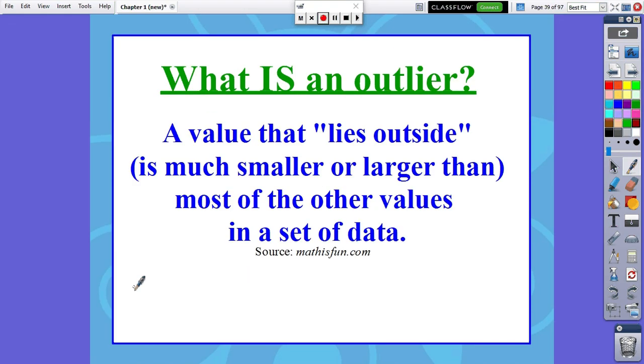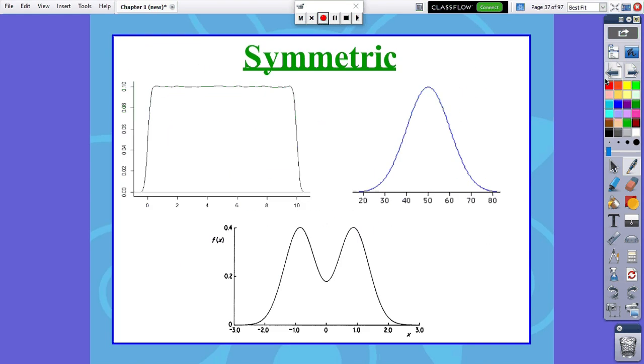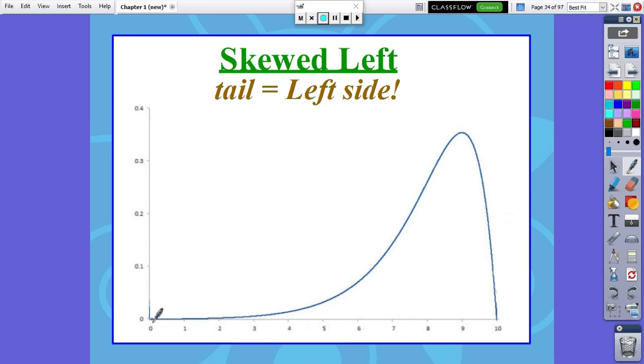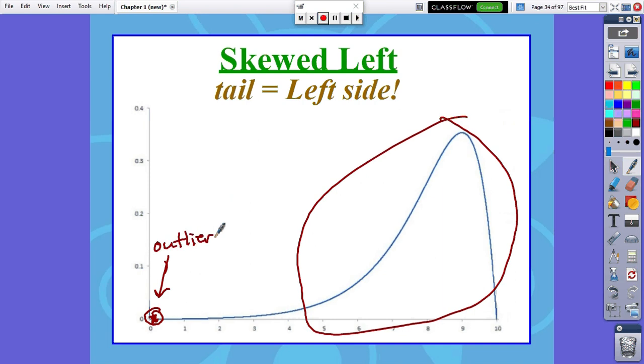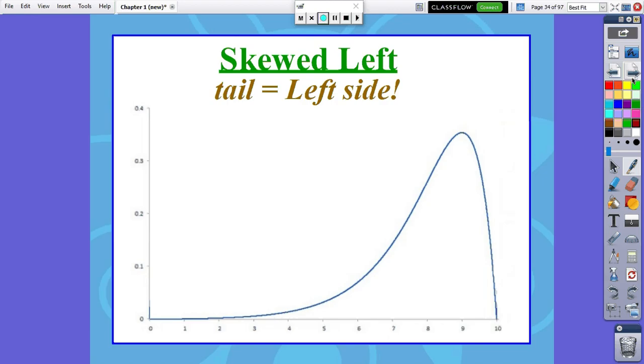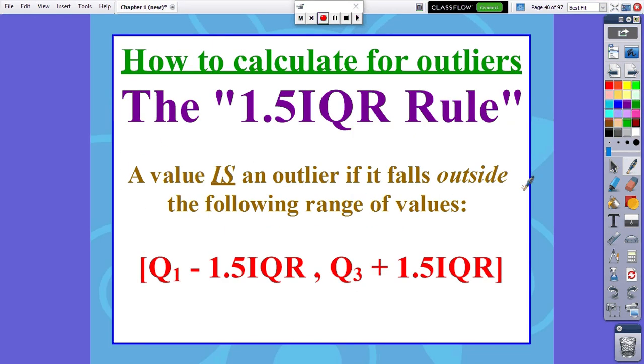So what is an outlier? The definition we're going to use is it's a value, or it could be multiple values, that lie outside. What we mean by lies outside is it's much smaller or larger than most of the other values in a set of data. For example, in this skewed left distribution, if we had a value really close to zero, if you look at that value compared to all the other values, we've got a big chunk of data that's more than four. If we had a value all the way down at zero, that's not like most of the rest of the data. We might refer to it as an outlier. But how far away does a value need to be from the bulk of the rest of the data to really be called an outlier?